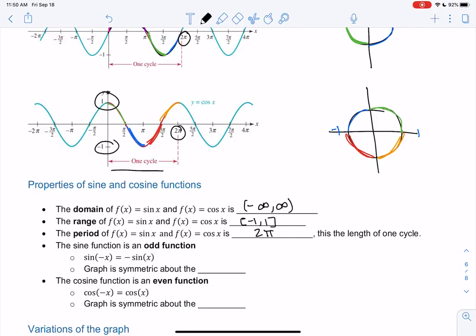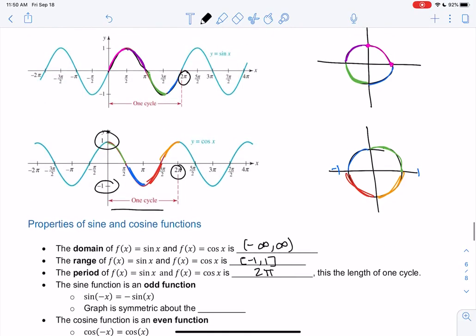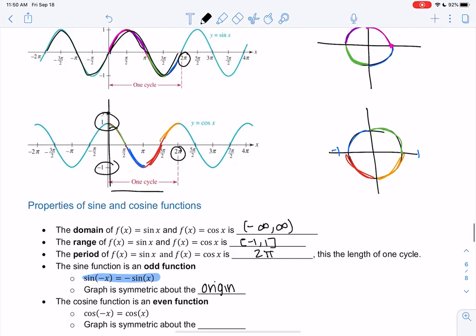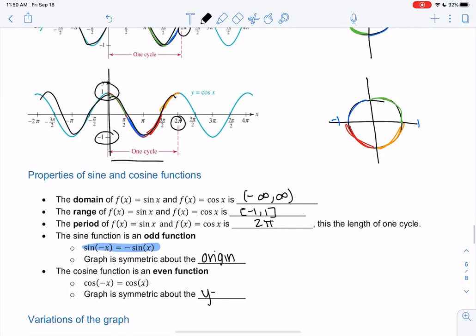We might remember that sine is odd. We have the symmetry about the origin. It also tells us that sine of negative x is equal to negative sine of x. Cosine of x is even, you'll notice the symmetry about the y-axis. If you folded it, it would be the same. And that tells us that cosine of negative x is cosine of x.